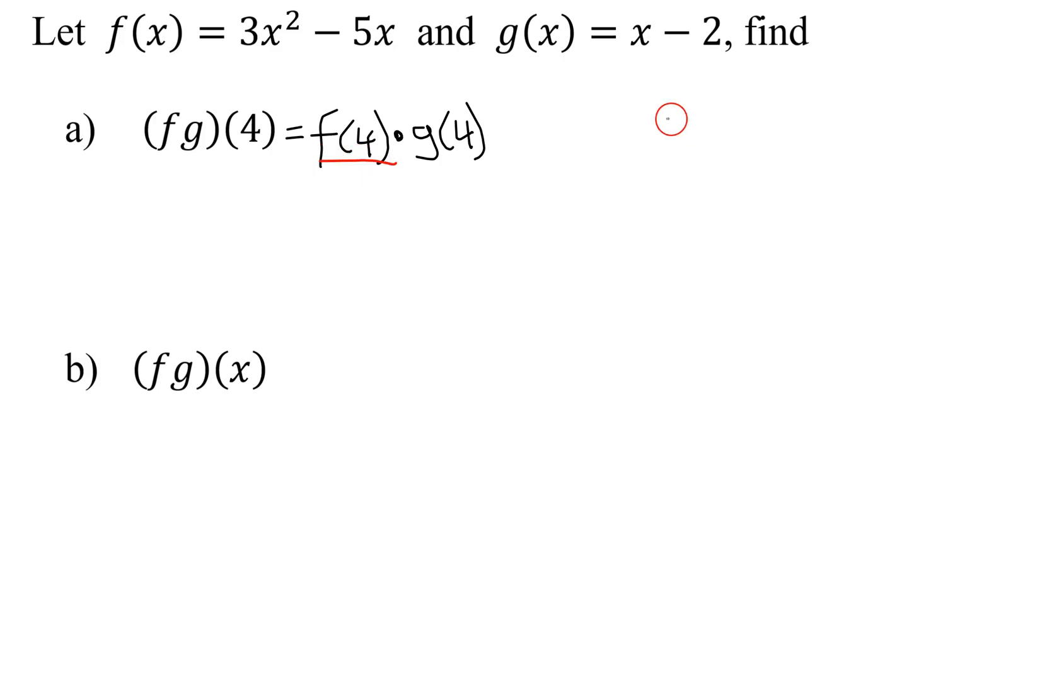So let's look at f(4). f(4) equals—means I put a 4 in for all of these x's. So I'm going to get 3 times 4² minus 5 times 4. So remember, you have to do exponents first. So 3 times 4 times 4 is 16, minus 5 times 4 is 20. 3 times 16 is 48 minus 20. So I know that f(4) is equal to 48 minus 20, which is 28.